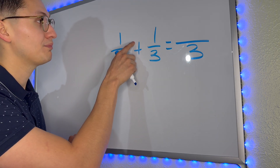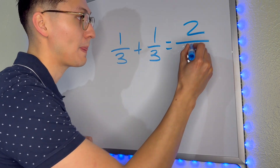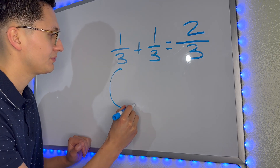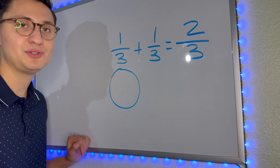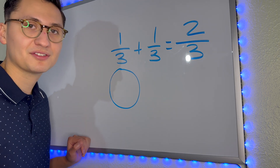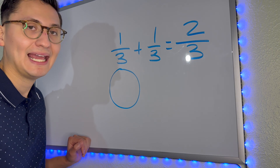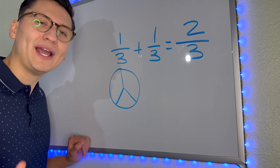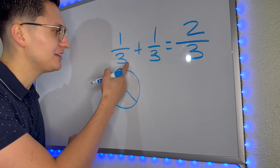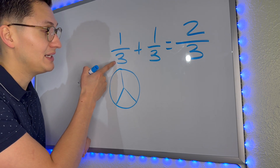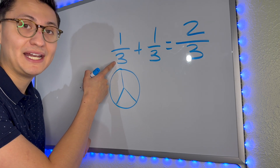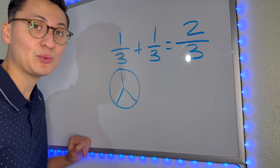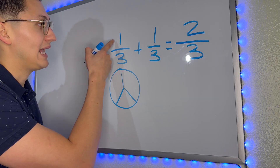So, one plus one is two. Now, let's look at it with a picture. Let's say we go to Peter Piper, to Domino's Pizza, to Little Caesars, and we have a pizza that is divided into three equal slices. Why did we divide it into three equal slices? Because the denominator tells us that we must divide it into three.